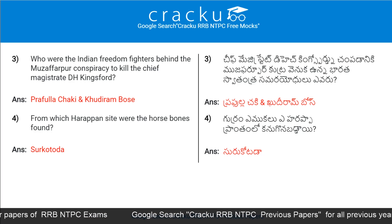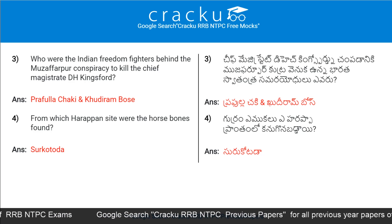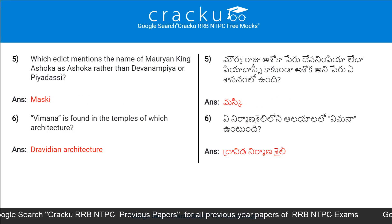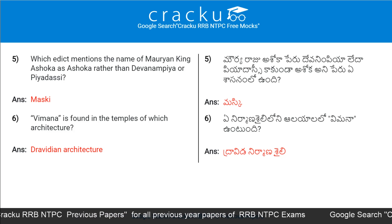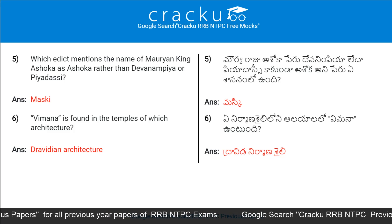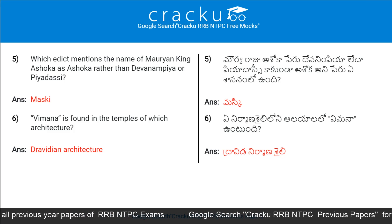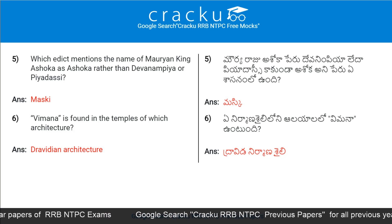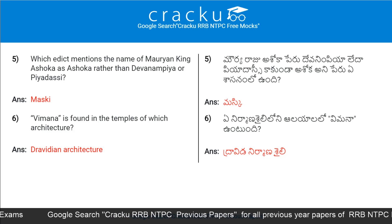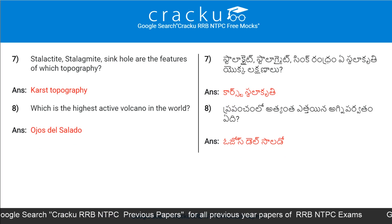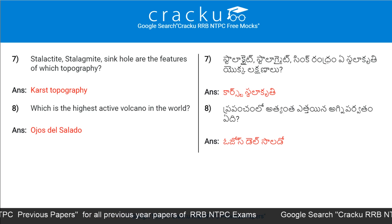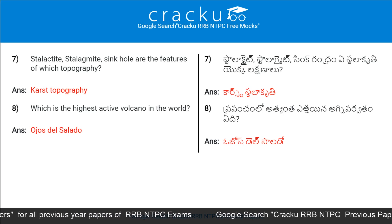From which Harappan site were the horse bones found? Surkotada. Which edict mentions the name of Mauryan King Ashoka as Ashoka rather than Devanampiya or Piyadasi? Maski Edict. Vimana is found in the temples of which type of architecture? Dravidian architecture. Stalactite, stalagmite, and sinkhole are the features of which topography? Karst topography.